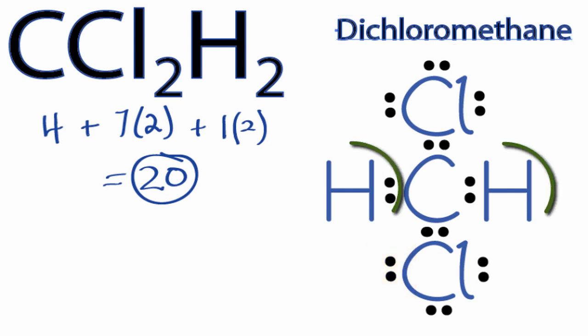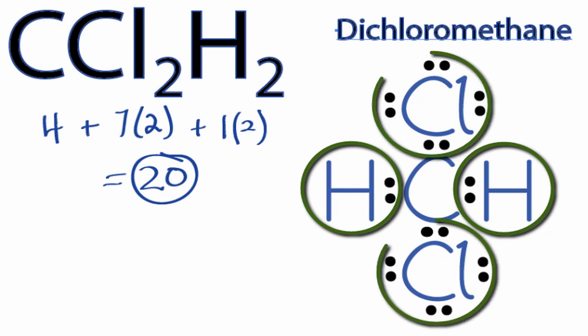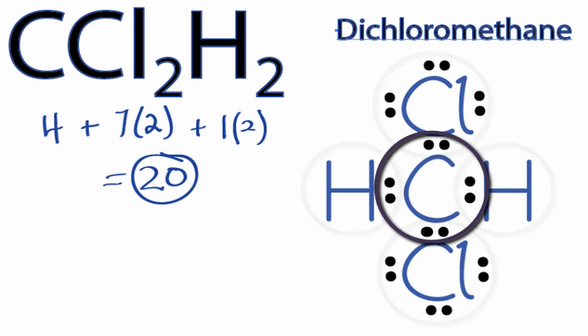So the hydrogens have two valence electrons. Their outer shells are full. Both chlorines have eight valence electrons. They have octets with their outer shells being full. And then that central carbon, it has eight valence electrons. So we've fulfilled the octets, filled the outer shells on all of the atoms, and we've used the 20 valence electrons that we have for the CCl2H2 Lewis structure.